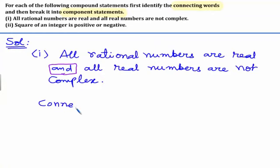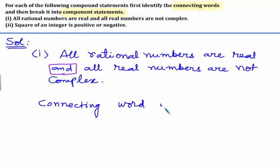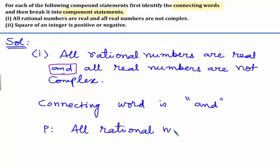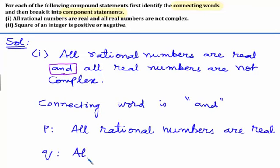The connecting word is AND. The two statements are: the first one is before the connecting word and the next one is after the connecting word. The first component statement is: all rational numbers are real. And the second component statement is: all real numbers are not complex.